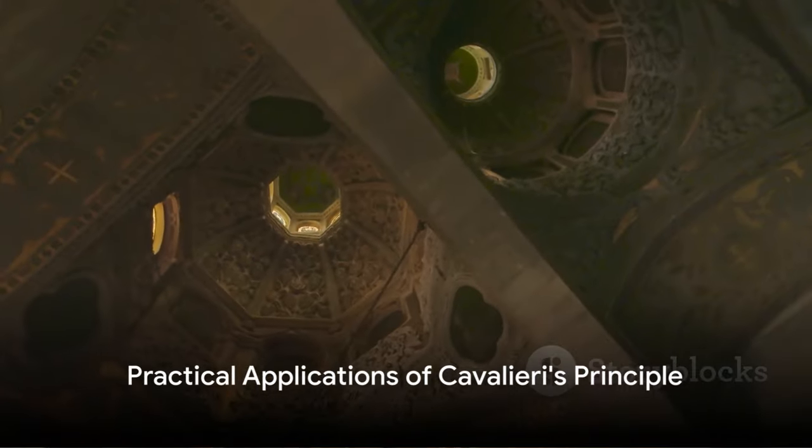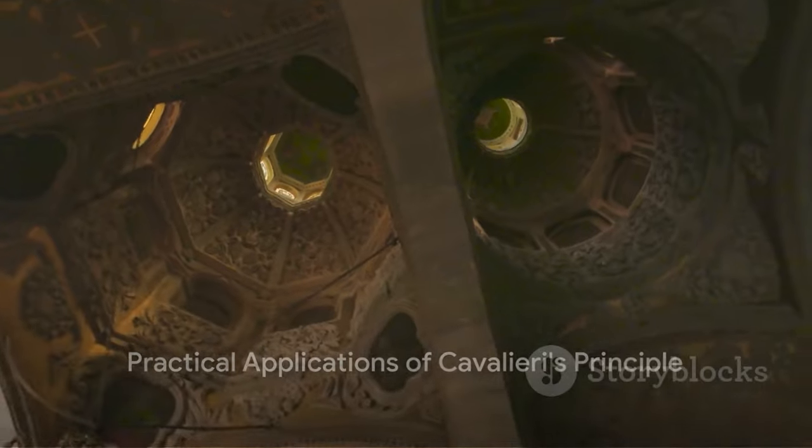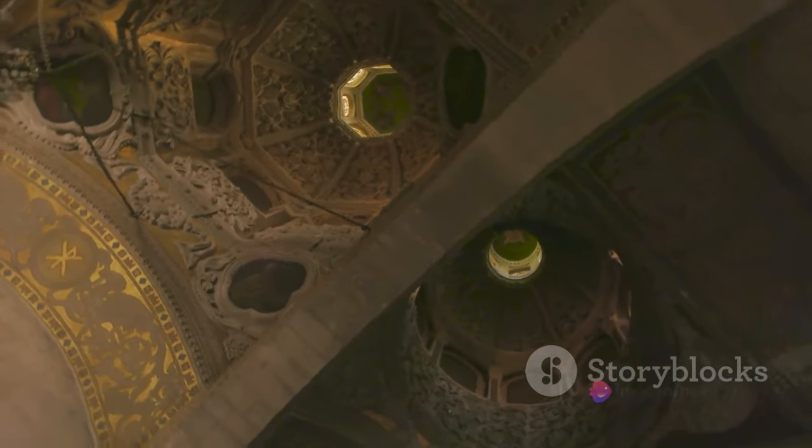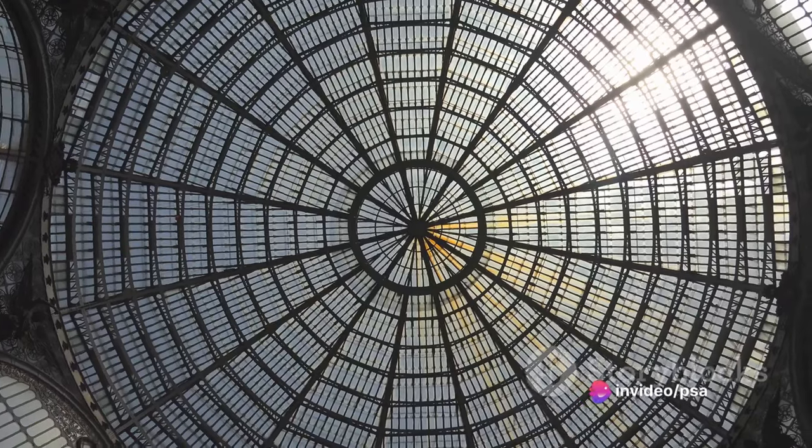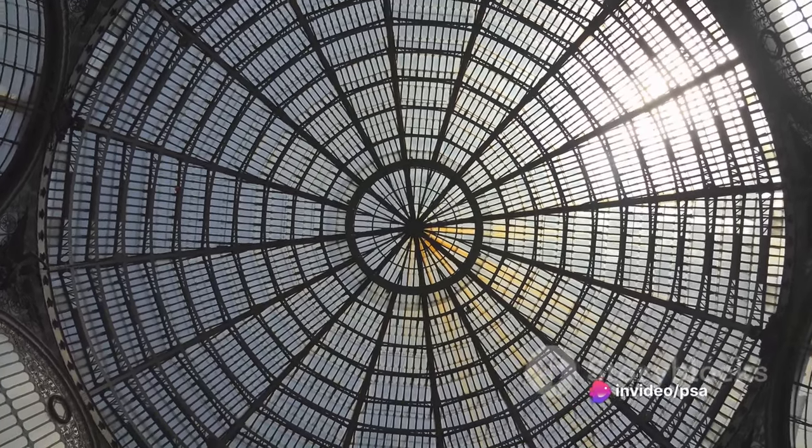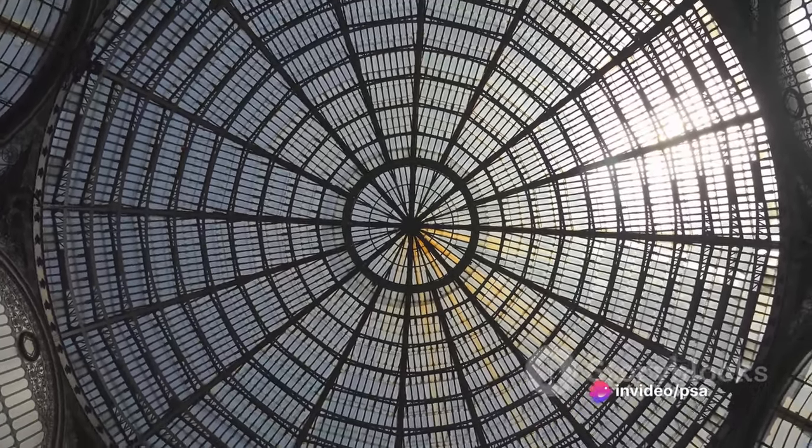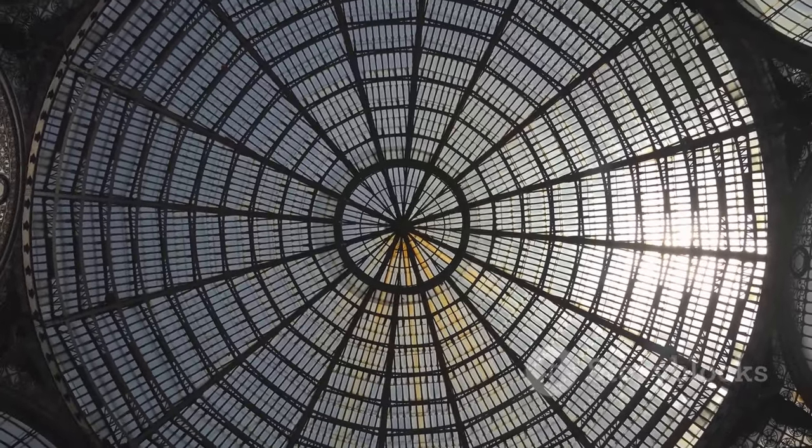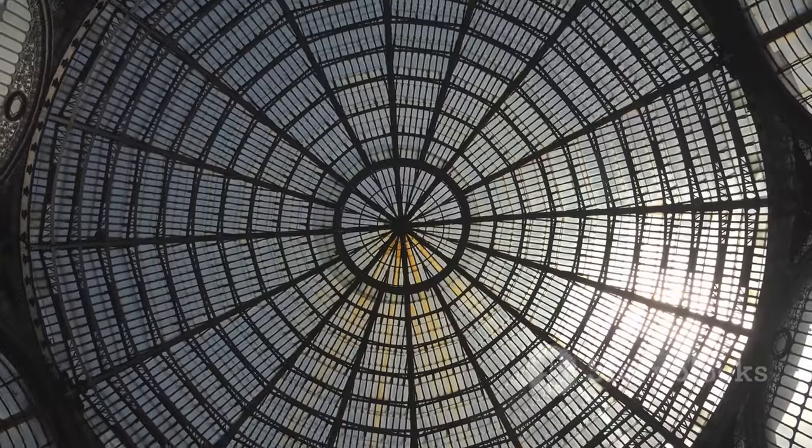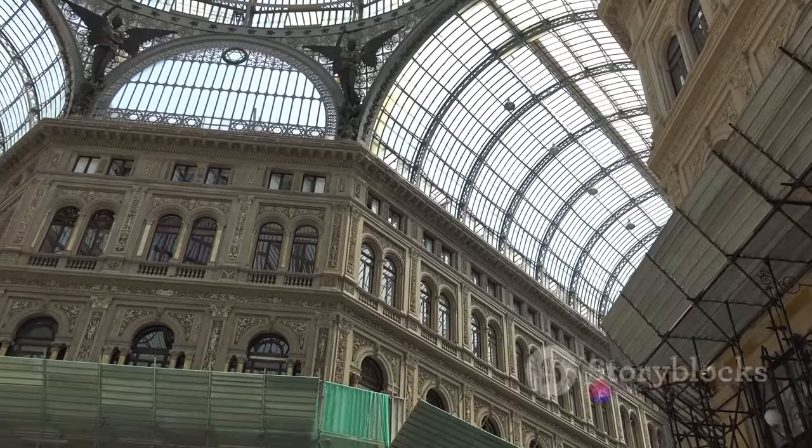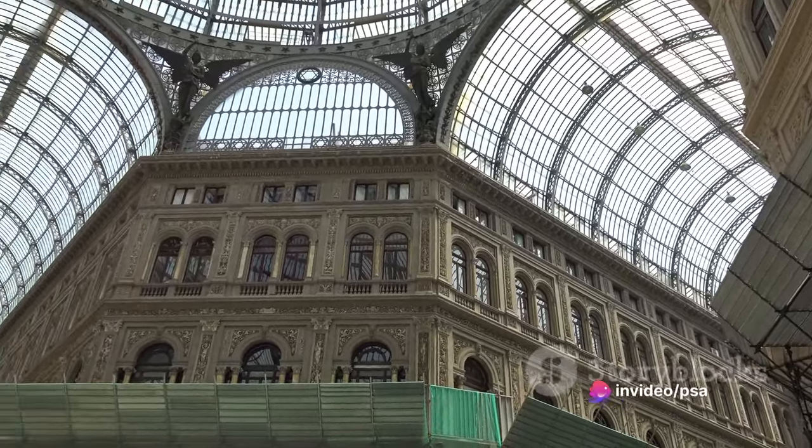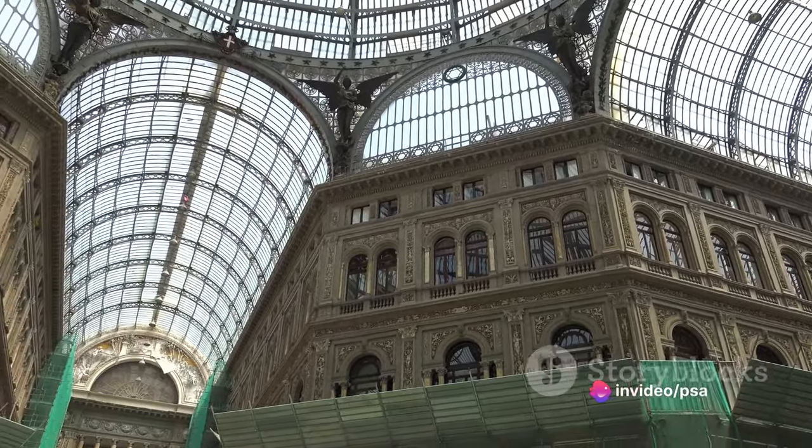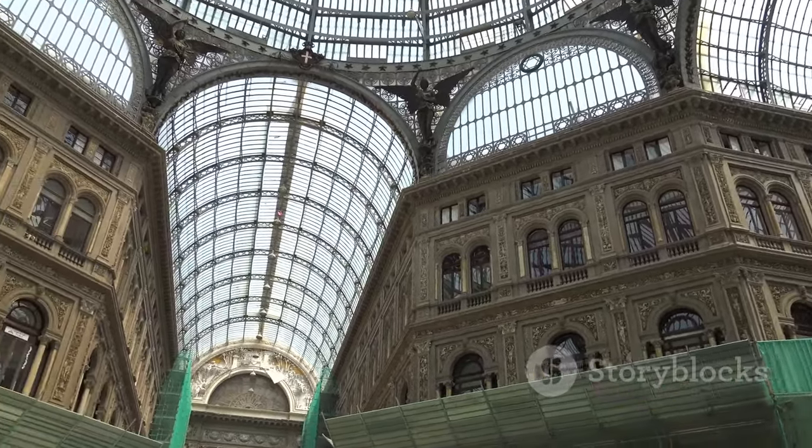But Cavalieri's principle isn't just a theoretical concept, it has practical applications too. Let's dive into a few areas where this principle really comes into play. First up is architecture. Architects often need to calculate the volumes of irregular shapes when designing buildings. For instance, consider the design of a dome or a vaulted ceiling. These are not simple geometric forms, but Cavalieri's principle allows architects to calculate their volumes accurately, ensuring that their designs are both aesthetically pleasing and structurally sound.